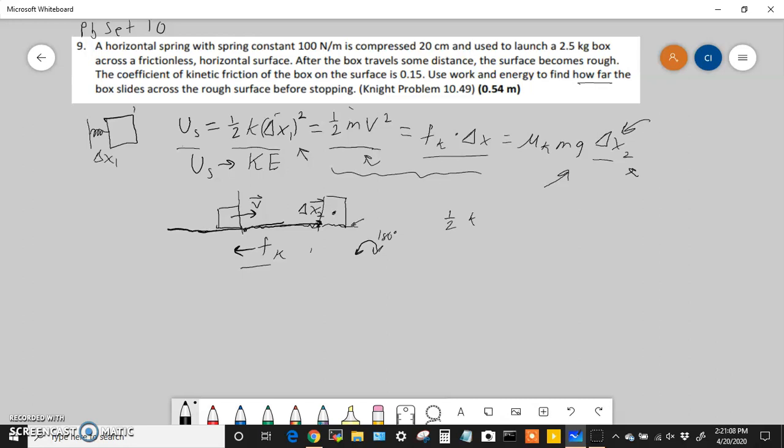So then we have that one half k delta x1 squared equals mu k mg delta x2. So then we just solve for delta x2. Then delta x2, we just divide by these two on both sides, then delta x2 is going to equal one half k...